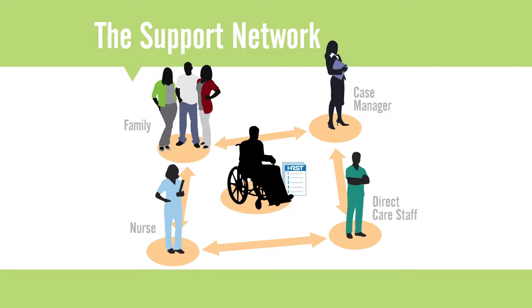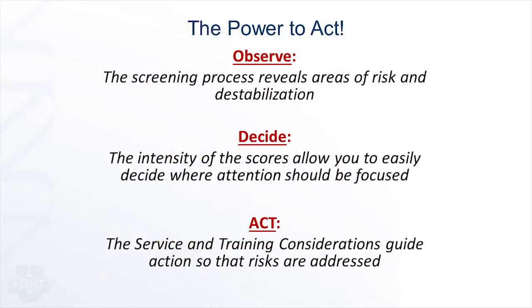This ensures that everyone is aware of these risks and how to manage them adequately, encouraging unified action. The HRST seeks to provide the team and family with the opportunity to observe where risk and destabilization is or may occur, decide how to respond, and take action. Identifying health risks and signs of health destabilization early is vitally important, and taking action is also critical.